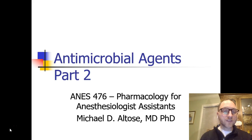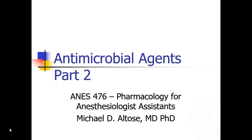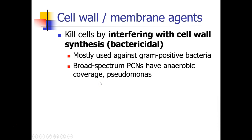Hi, this is Michael Altos, and we're continuing our discussion of antimicrobial agents — this is Part 2. The first set of antibiotics we're going to discuss are the cell wall or cell membrane agents. These are antibiotics that kill cells, which means they are bactericidal, and they do so by interfering with cell wall synthesis. Usually they're used against gram-positive bacteria, and we're going to start by talking about drugs like penicillin.